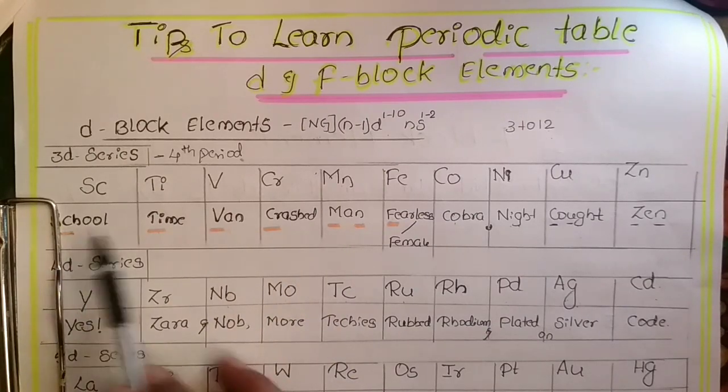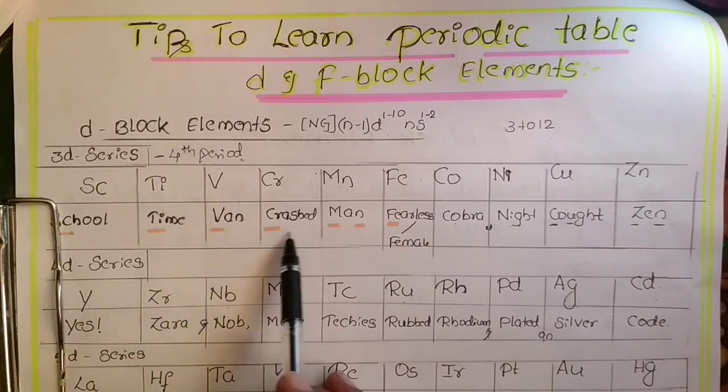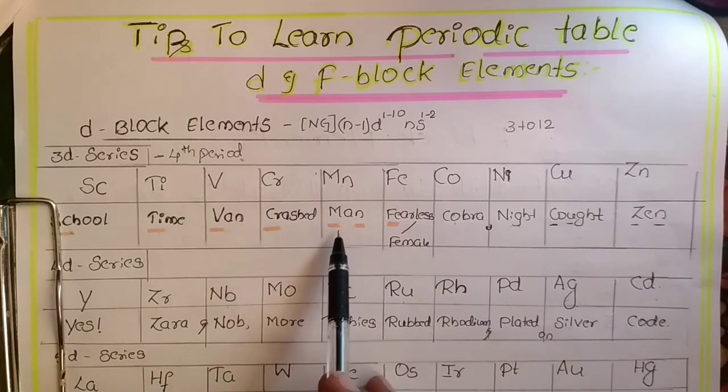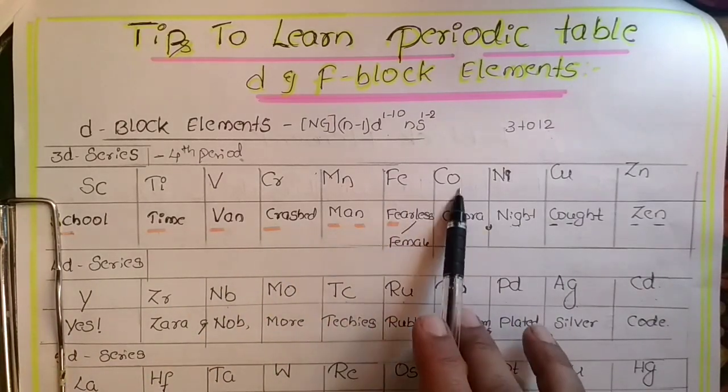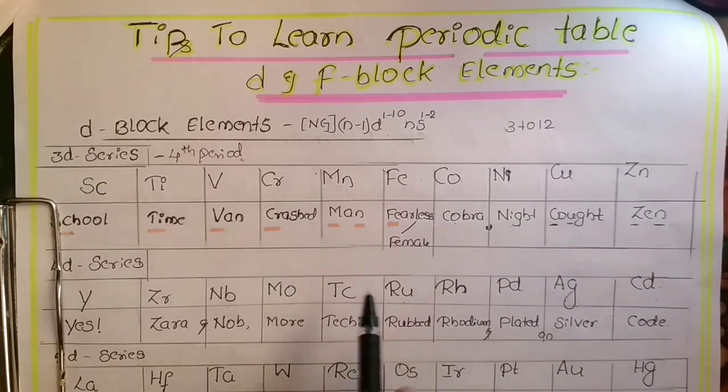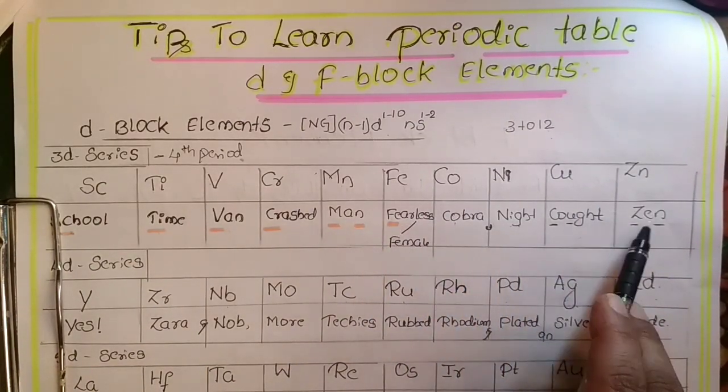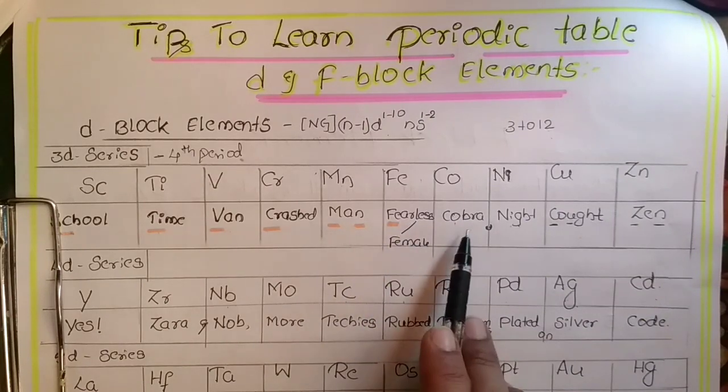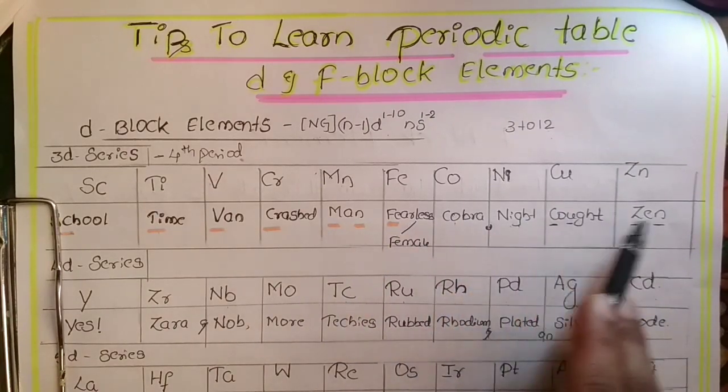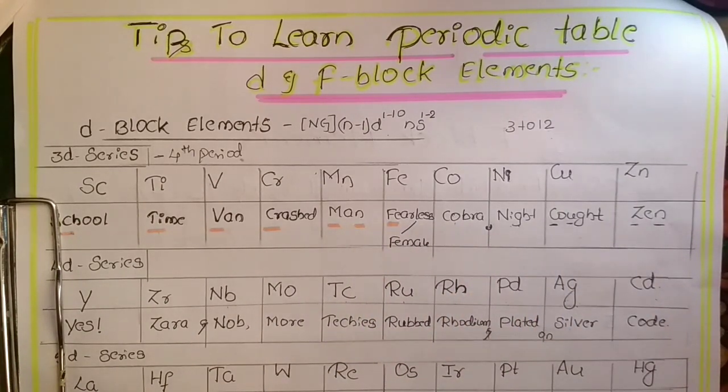Similarly for iron, cobalt, nickel, copper, zinc I can use: fearless cobra at night caught zen. This is about the 3d series.